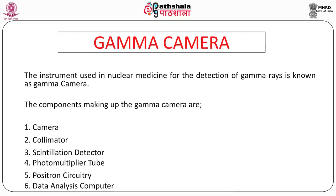A patient who has been administered a radiopharmaceutical emits radiation. It comes to the collimator, whose function is to ensure that only those radiations coming parallel — in a parallel-hole, pinhole, diverging, or converging collimator — go to the detector. The detector is a sodium iodide thallium-activated crystal. A light photon is produced, goes through the PM tube where electrons are generated, and through the positron circuitry, a computer performs the analysis and produces a quality image.